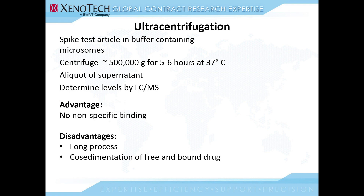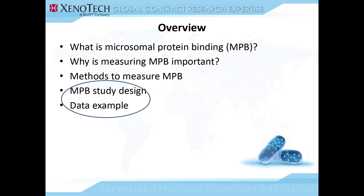The third method is ultracentrifugation, in which the sample is added to a tube and centrifuged at very high speeds for prolonged periods. The supernatant has the fraction unbound, which is determined by LC-MS. The advantage is that since there is no membrane, there is no non-specific binding. The disadvantage is it's a long process and the drug and the protein may co-sediment simultaneously.